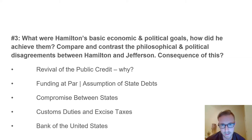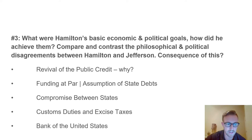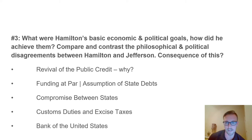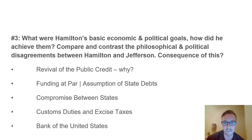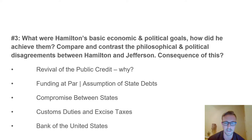Hamilton argued for a Bank of the United States—this bank would print paper money, providing stability for how much paper money would be worth in America and how much would be in circulation. One major problem: nowhere in the Constitution does it mention a national bank. Thomas Jefferson quickly pointed this out, arguing it was unconstitutional and that the states could handle this themselves. Despite Jefferson's opposition, Hamilton essentially got his way, and a national bank was established in Philadelphia in 1791, lasting about 20 years.